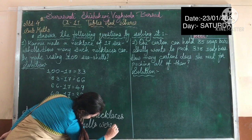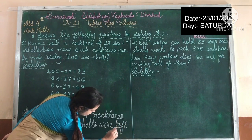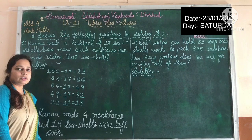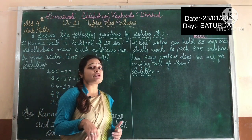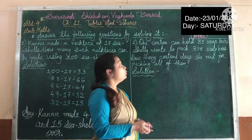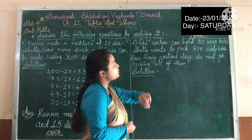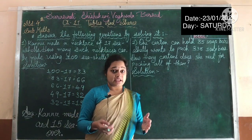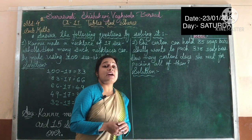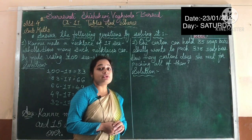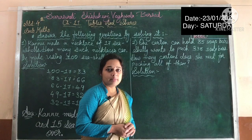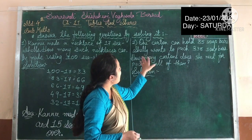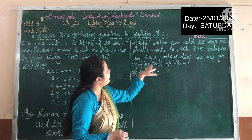15 shells were left over. Clear everyone? It's a very easy and simple thing — if you revise it yourself, okay. Let's see number two. One carton can hold 85 soap bars. Shelley wants to pack 338 soap bars. In one box or one carton, 85 soap bars fit. Shelley has 338 soap bars and needs to pack all of them. The question is: how many cartons does she need for packing all of them?